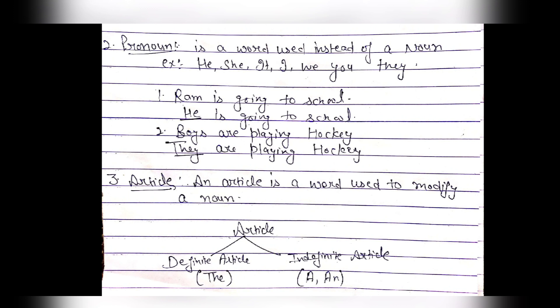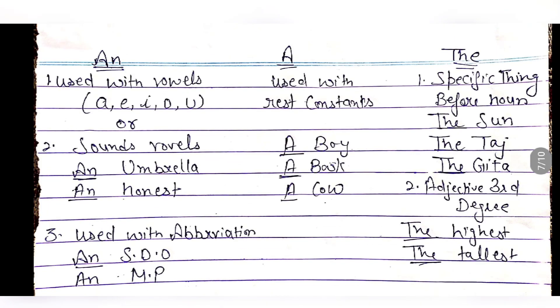Next is article. An article is a word used to modify a noun. Articles are of two types: definite article and indefinite article. The definite article is 'the.' The indefinite articles are 'a' and 'an.' 'An' is used with words that start with vowel sounds. The five vowels in English are: a, e, i, o, u. For example, 'an umbrella' — umbrella starts with 'u,' a vowel, so we use 'an.' Also, 'honest' starts with 'h' but sounds like a vowel, so we say 'an honest.'